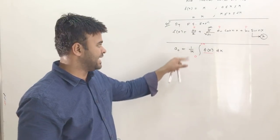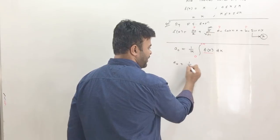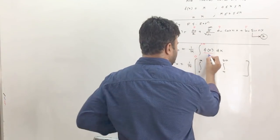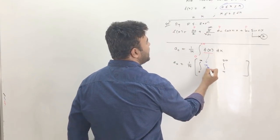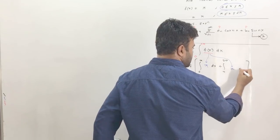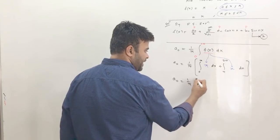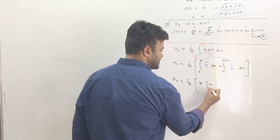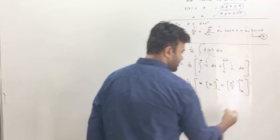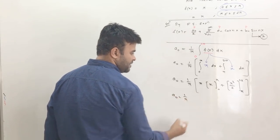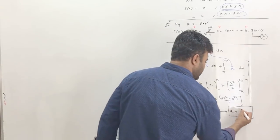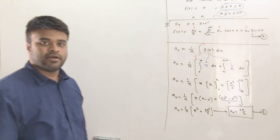To find a₀, split the integral from 0 to π and from π to 2π, since f(x) = π on [0, π] and f(x) = x on [π, 2π]. Integrating: a₀ = 1/π [ π·x from 0 to π + x²/2 from π to 2π ]. Evaluating these gives us the value of a₀.